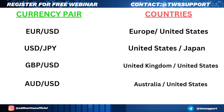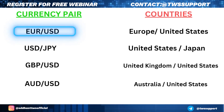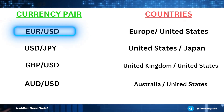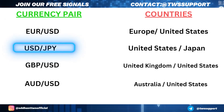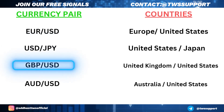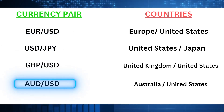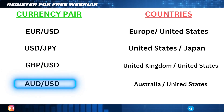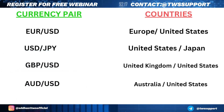A currency pair like EUR/USD represents Europe and the United States. USD/JPY represents the United States and Japan. GBP/USD represents the United Kingdom and the United States. AUD/USD represents Australia and the United States. So there are many pairs available for trading.